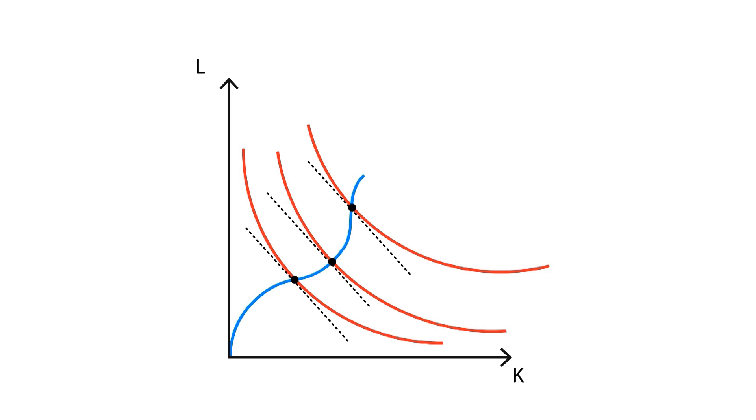To sum up, the analysis of isoquants is very important when analyzing production. We should also keep in mind the relation between isoquants and the marginal rate of technical substitution and isoclines.